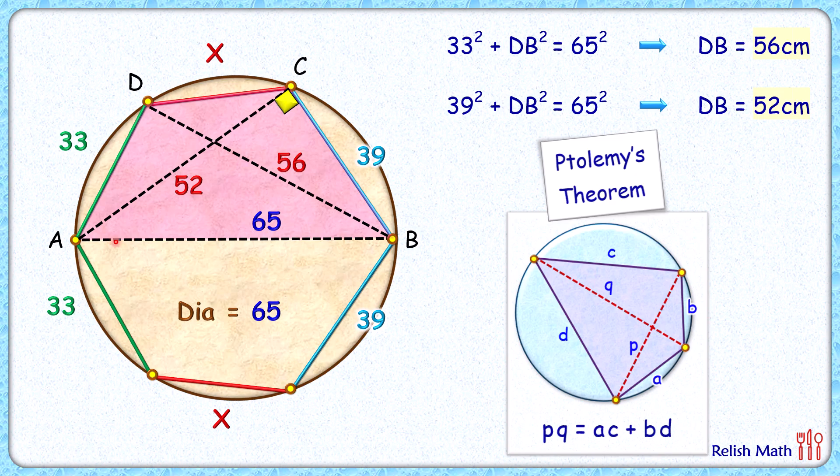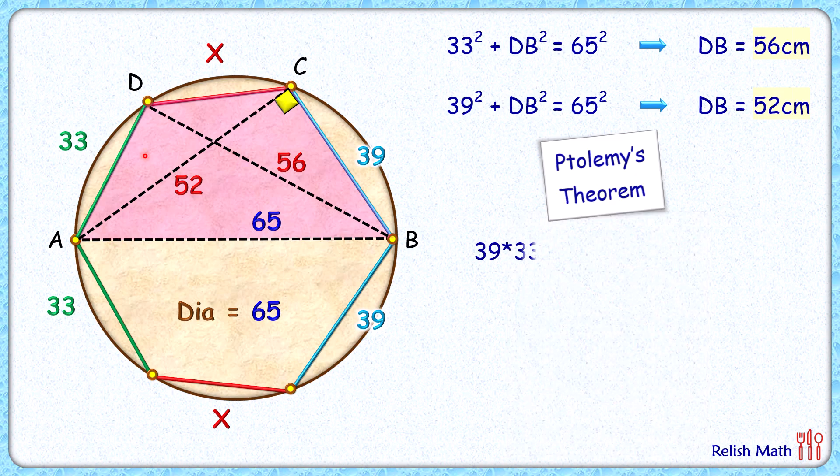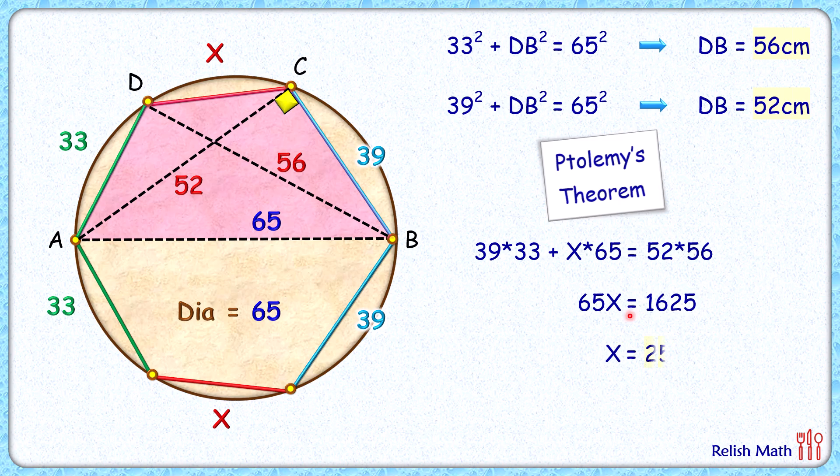So here the sum of product of sides, that will be 33 times 39 plus 65 times x equals the product of diagonals, that is 52 times 56. Solving it for x will get x as 25 centimeters, and that's our answer.